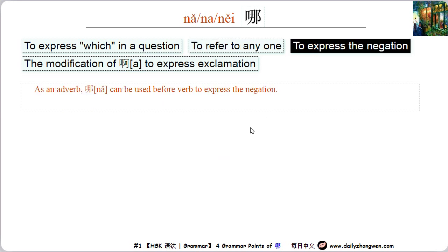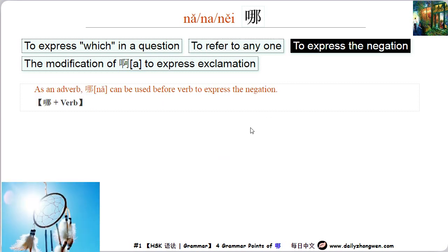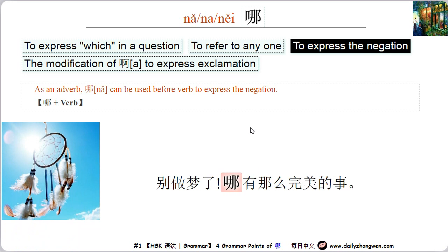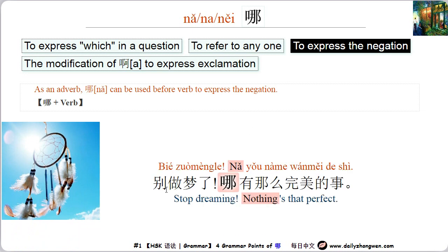When used as an adverb, 哪 can express negation. For example: 别做梦了。哪有那么完美的事？别做梦了 means 'stop dreaming'. 哪 is placed before the verb 有. 哪有那么完美的事 means 'there's no such perfect thing'.